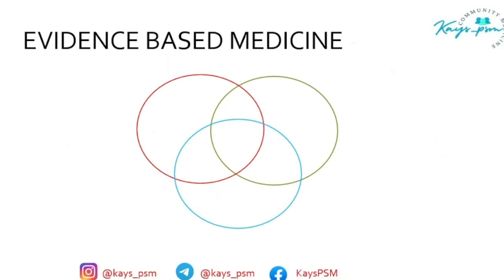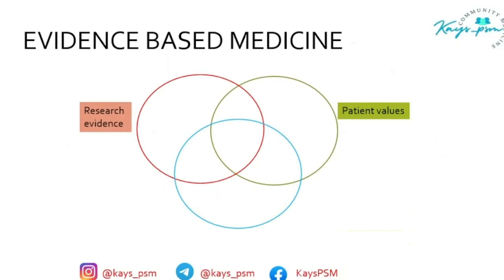Before I go to meta-analysis and systematic review, I want to explain evidence-based medicine. Suppose you have a 90-year-old patient with breast cancer and you have to decide about chemotherapy. First, you should know what the recent research suggests about chemotherapy. Then you should know about patient values — what the patient wants, is it affordable, is she willing to accept chemotherapy. Lastly, it is your clinical experience. All these three things are part of evidence-based medicine.